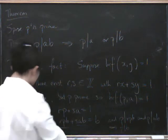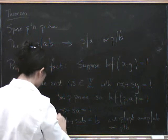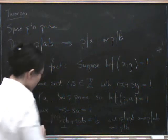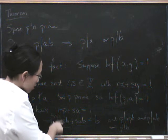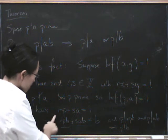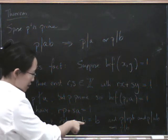And now we use a trick, which is that we now multiply the whole thing by b to get rpb plus sab equals b.